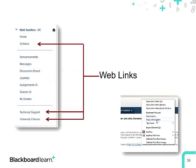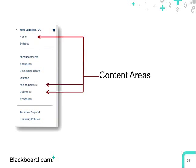My syllabus, technical support, and university policies are web links. Tech support and policies are external pages hosted by my institution, but why is my syllabus a web link? A few minutes ago I uploaded it from my welcome item into the home area. I don't want to upload it again, and I don't need an entire content area for it. So I've copied the link location from that link in the welcome item — right-click, Copy Link Location in Firefox or Copy Link Address in Chrome — and paste that as my web link. Home, assignments, and quizzes are content areas.